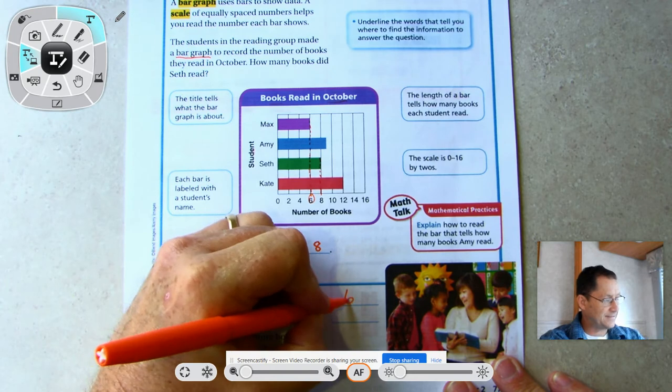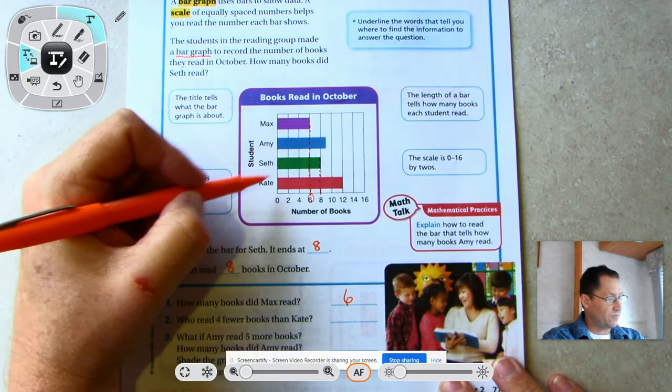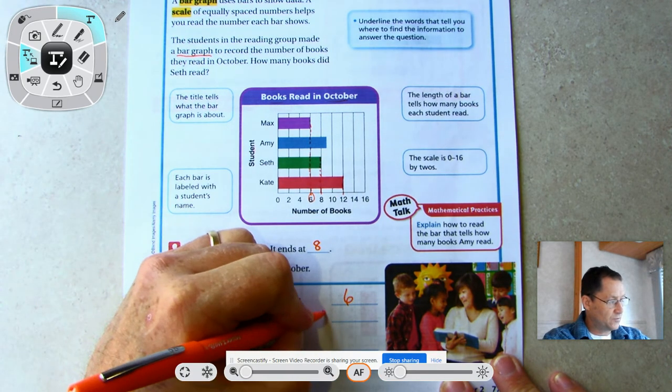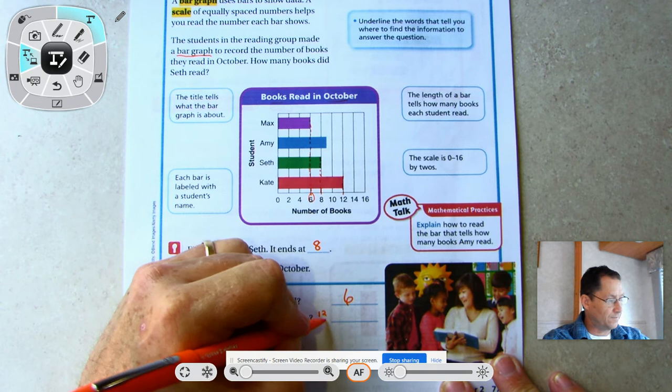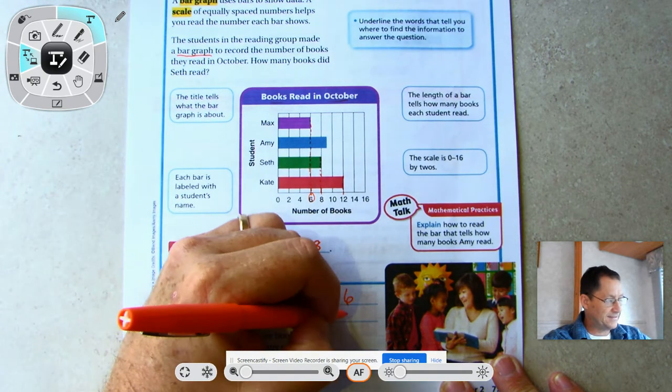How many books did Max read? Find Max, and we'll go down where the end of his bar ends, and we see that it is six.